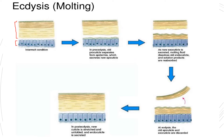In the first step, there is mainly the digestion of the endocuticle. You can see there is now a space between the epidermis layer and the endocuticle. This portion of the endocuticle is digested first to begin the removal of the exoskeleton from the body of the arthropod.